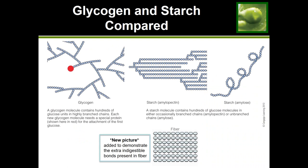Starch is the same concept, except starch is the way that plants store extra glucose. This picture shows what these two types of polysaccharides look like. Glycogen on the left is a bunch of glucose units linked together — the blue units are glucose. On the right, we have two different types of starch found in foods. Even though they look different, they are still a bunch of glucose units linked together.